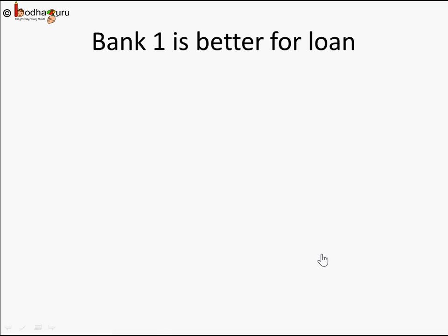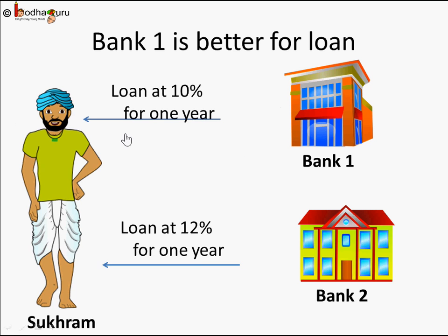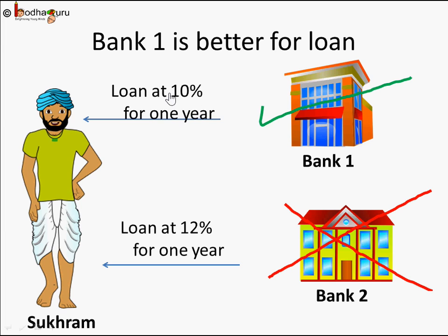Now you tell me which one you are going to choose. Of course when you are taking a loan you are going to choose the bank offering a lower rate of interest, so that you repay less. So Sukram will select Bank 1 and not Bank 2 - he gets a lower rate of interest and only has to repay 1,000 rupees extra, whereas Bank 2 charges 1,200 rupees extra. Both banks give you the same loan amount, so why pay 200 rupees extra?